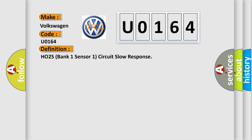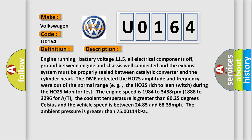Here is a short description of this DTC code. Engine running, battery voltage 11.5V, all electrical components off, ground between engine and chassis well connected, and the exhaust system must be properly sealed between catalytic converter and the cylinder head. The DME detected the HO2S amplitude and frequency were out of the normal range — for example, the HO2S reached a lean switch during the HO2S monitor test. The engine speed is 1,984 to 3,488 RPM, the coolant temperature is greater than 80.25 degrees Celsius, and the vehicle speed is between 24.85 and 68.35 miles per hour. The ambient pressure is greater than 75.00 kilopascals.